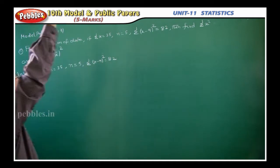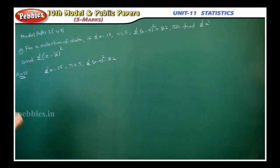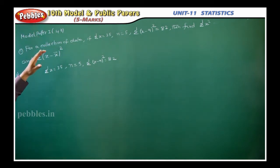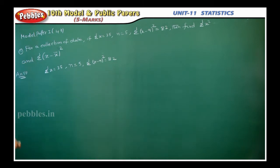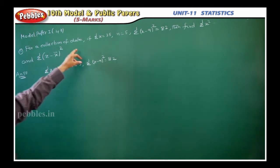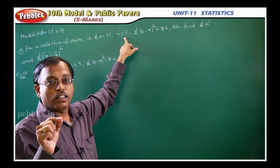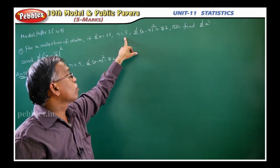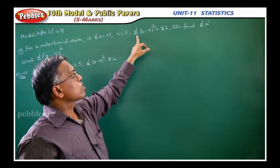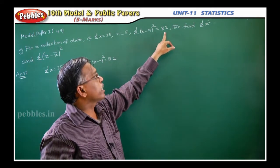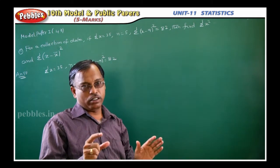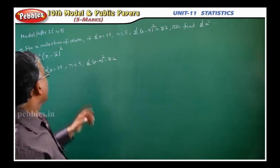We will see statistics 5r and first we are going to cover the model paper 5r questions, model paper 1, question 43. We are doing it as the first question. This is a very easy problem. For a collection of data, sigma x is equal to 35, n (number of values) is equal to 5, and sigma (x minus 9) whole square is 82. These three values are given.